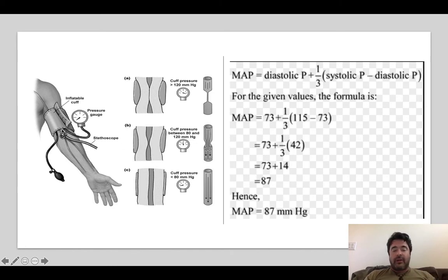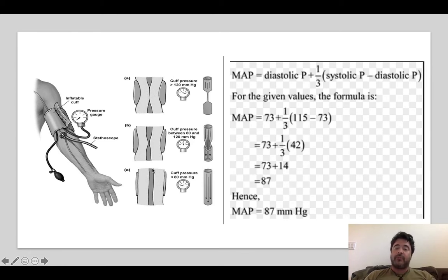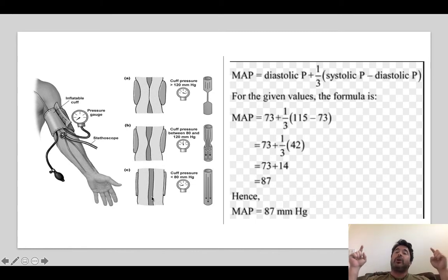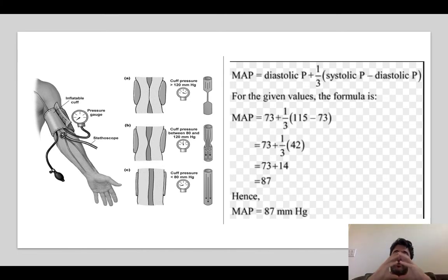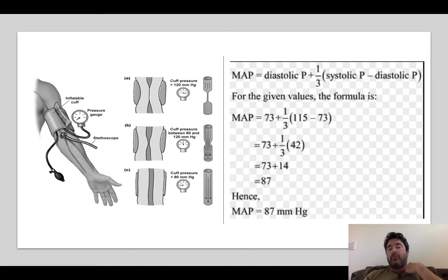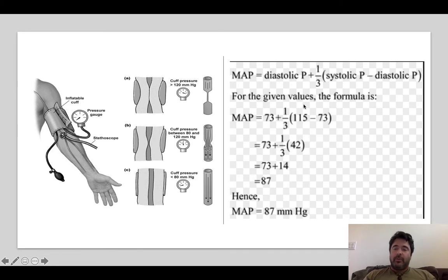You continue to let air out of the cuff, and eventually the pressure in the cuff will be lower than the pressure in the artery during both ventricular systole and ventricular diastole. The needle will stop jumping, and you call that diastolic blood pressure — the pressure in arteries during ventricular diastole. Arteries are really elastic because they have to cope with these major pressure fluctuations. I'll introduce the concept of mean arterial pressure here because we're going to talk about it in lab.